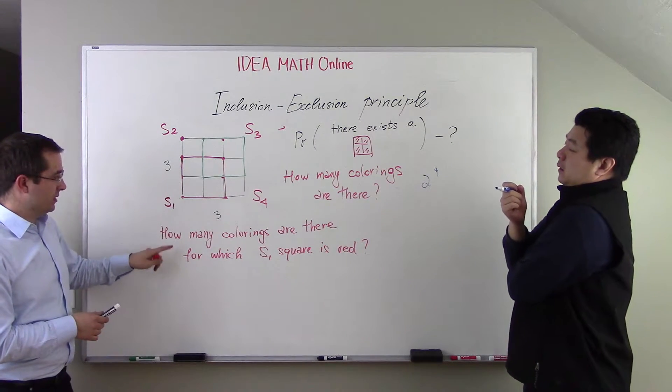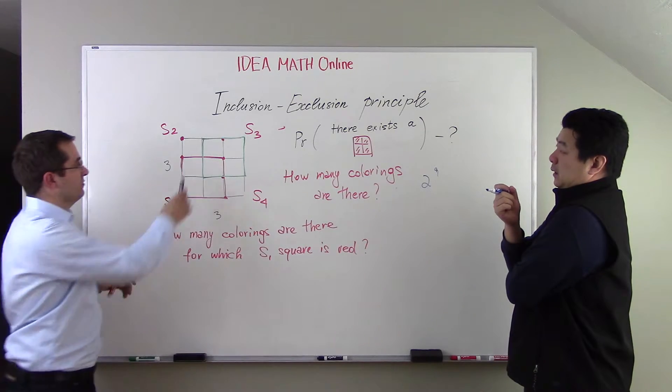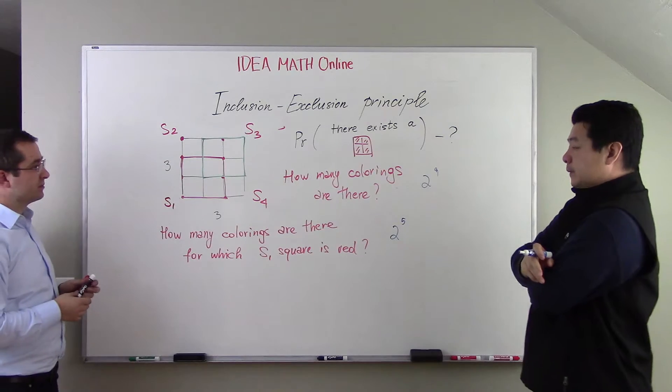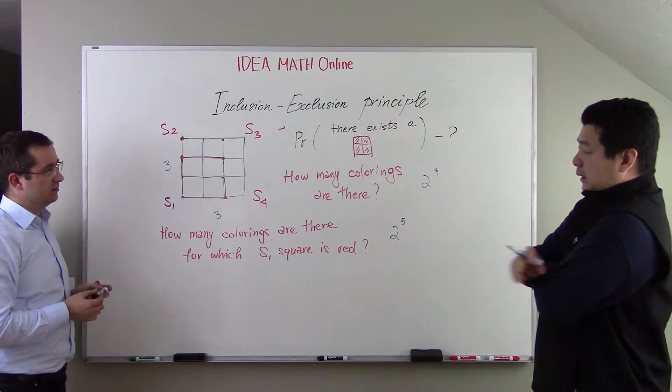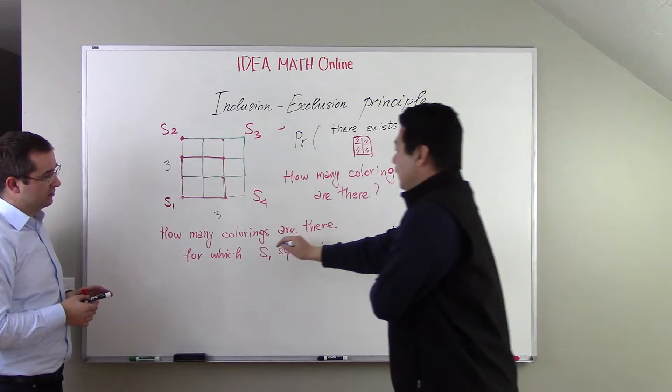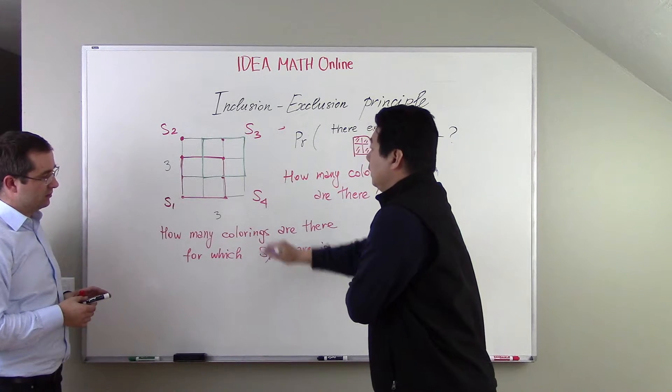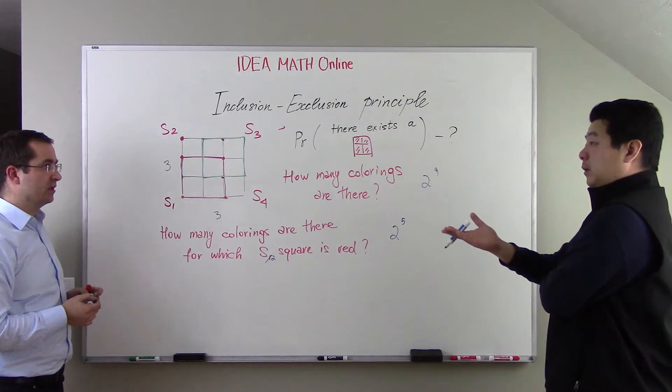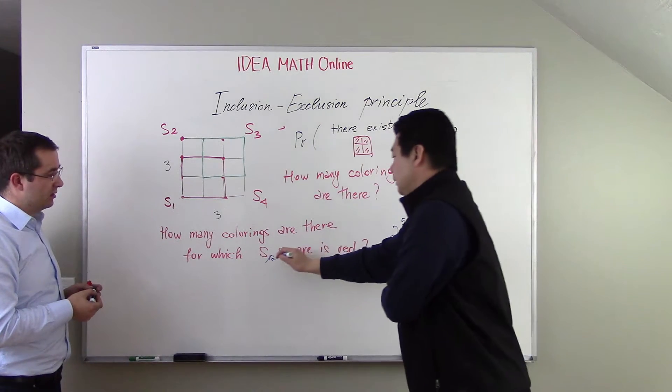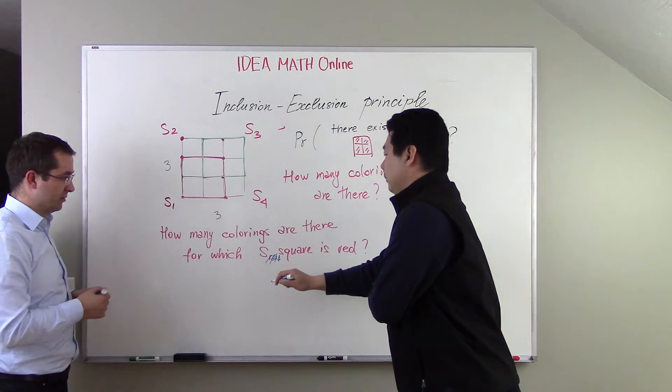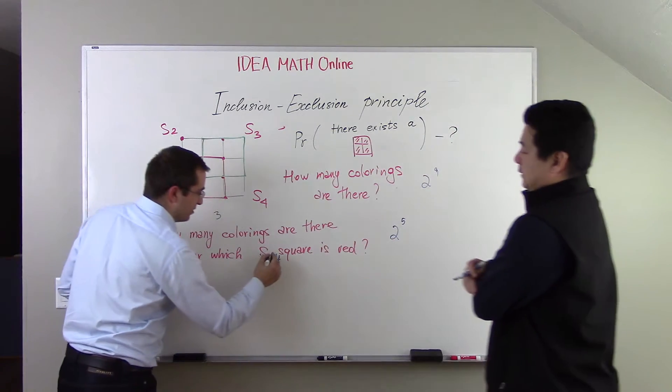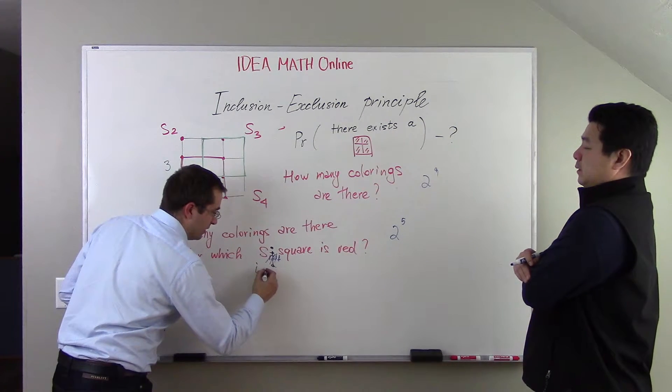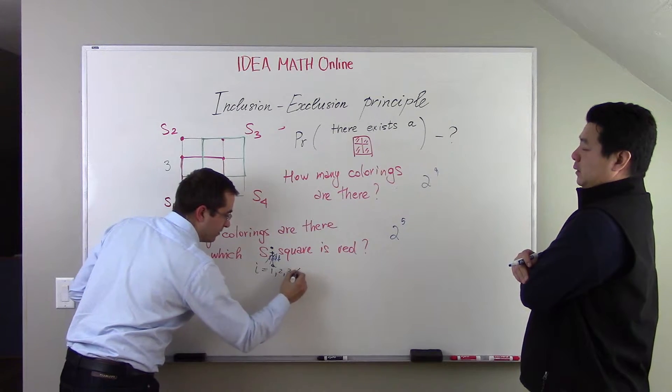So this is very easy. This is 2 to the 9th power. And this is also not too hard, because if S1 is all red, I have only 5 squares left, so 2 to the 5. And a similar question you can pose: instead of S1, how about S2? The answer will be the same. S3? The same. S4? The same. So here we can write just big I, where I can be 1, 2, 3, or 4.